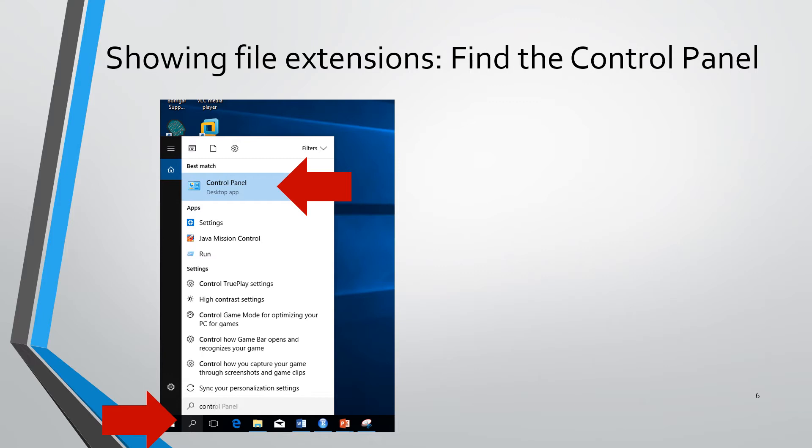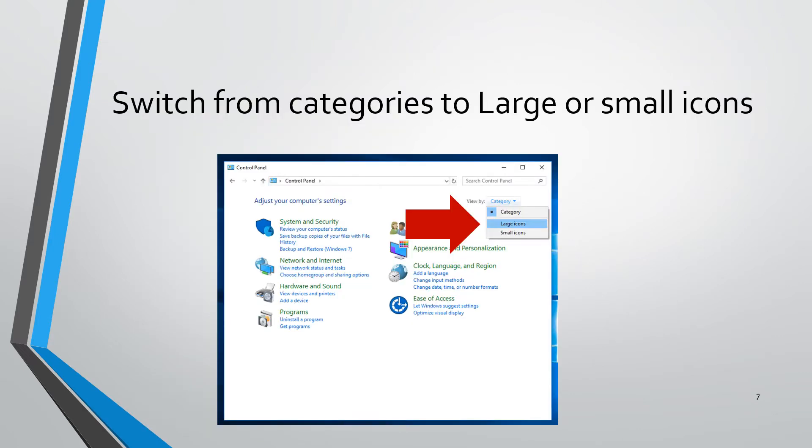So one way to do it is through the control panel. Use the search and search for the control panel and click on the control panel. I'm going to show you how to do it using the icon view. So go over to the view by drop down and choose either small or large icons. It doesn't matter.